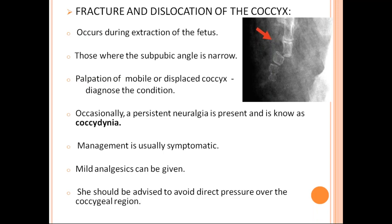Coming to fracture and dislocation of the coccyx — these occur due to extraction of the fetus when the subpubic angle is narrow. If the subpubic angle is narrow, pressure of the head is exerted backwards, and there may be dislocation or fractures of the coccyx. Palpation of the mobile and displaced coccyx during PV examination diagnoses the condition. Occasionally a persistent neuralgia is present, known as coccydynia — due to injury to surrounding nerves during coccyx dislocation.